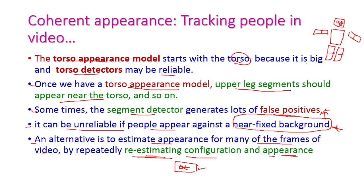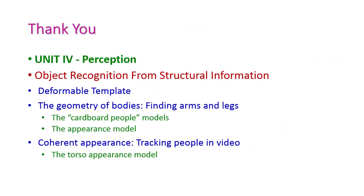So far we have seen object recognition from structural information from the fourth unit on perception. We covered the deformable template and two categories: first, geometry of bodies — finding arms and legs of a particular person in an image; and second, coherent appearance — tracking people in a video. For this we used the cardboard people model, the appearance model, and the torso appearance model. For more information please refer to the textbook. In the next class we will see another important topic from the fourth unit. Thank you.